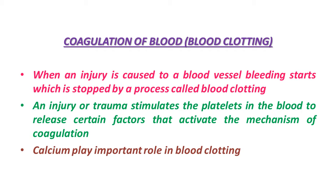An injury or trauma stimulates the platelets in the blood to release certain factors which activate the mechanism of coagulation. Certain factors released by the tissues at the site of injury can also initiate coagulation. Simply put, some inactive substances and a series of enzymes play an important role during the mechanism of coagulation. Over and above these factors, calcium ions also play a very important role in the clotting mechanism.